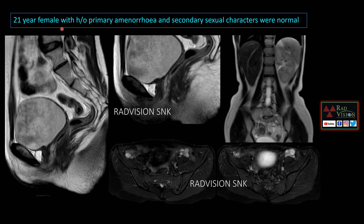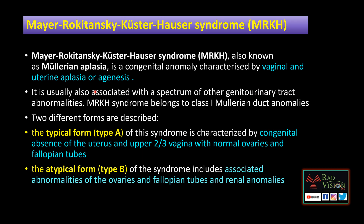Next case: 21-year-old female with primary amenorrhea and normal secondary sexual characteristics. You can see the uterus and vagina are not completely visualized. This is the bladder, this is the rectum, and both ovaries are normally visualized; however, the right kidney is not visualized. This is a classical case of Mayer-Rokitansky-Küster-Hauser (MRKH) syndrome, which is Class 1 Müllerian anomaly. The typical form (Type A) is congenital absence of the uterus and upper two-thirds of the vagina with normal ovaries and fallopian tubes. The atypical form includes associated abnormalities of the ovaries, fallopian tubes, and renal anomalies.